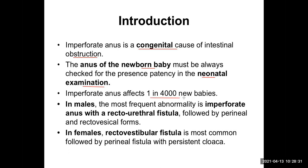Imperforate anus affects 1 in 4,000 newborn babies, so it is not uncommon. In male babies, the most frequent abnormality is imperforate anus with a recto-urethral fistula — this is a complicated thing. Fistula is always a complicated thing. This fistula is between the rectum and the urethra, followed by perineal and recto-vesical forms as well.